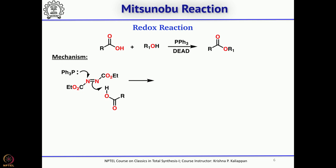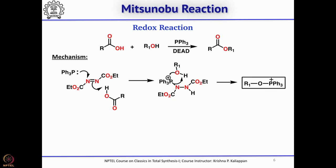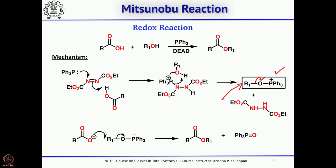The mechanism begins with triphenylphosphine attacking the nitrogen of diethyl azodicarboxylate. Then the other nitrogen picks up hydrogen from the carboxylic acid, giving a carboxylate anion with positive charge on triphenylphosphine. The oxygen of the hydroxyl group then attacks triphenylphosphine to give the key intermediate R-O-PPh₃⁺. The nucleophile (carboxylate) attacks R from the backside in an SN2 reaction, so the R-O bond breaks to form triphenylphosphine oxide and the ester product.